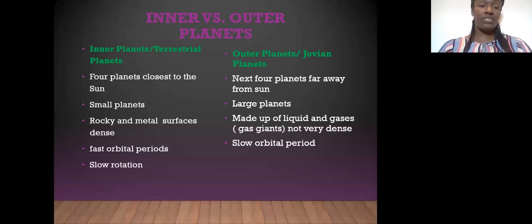However, the inner planets have slow rotation periods because they are made out of rocks and they are very heavy, so it's going to take some time for them to spin. The outer planets have fast rotation because they are made out of gases, so they are easier to spin around.